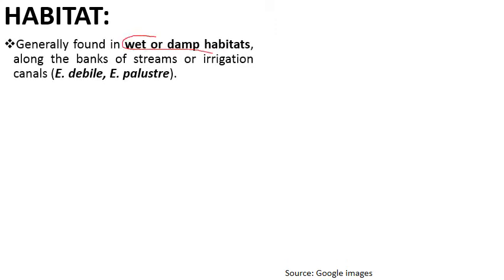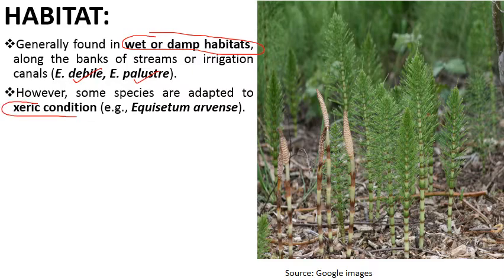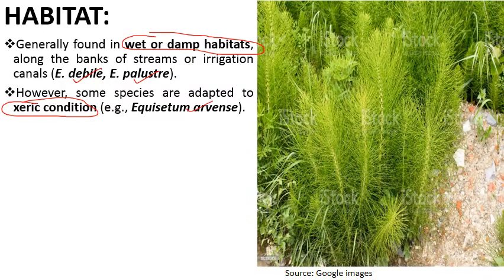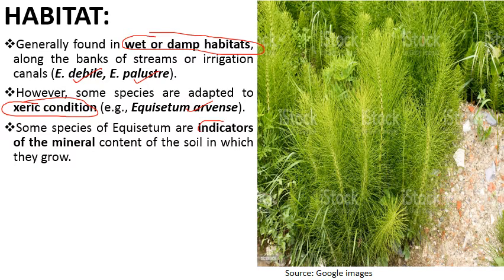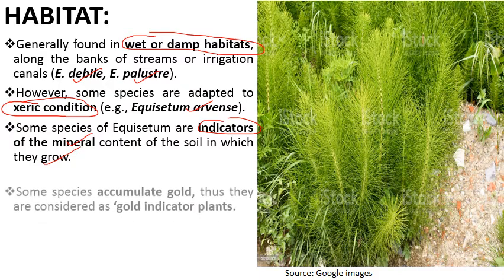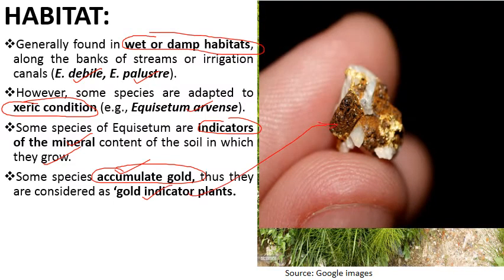Regarding habitat — the address of an organism — Equisetum prefers to grow in wet and damp habitats, mostly along the banks of streams or irrigation canals; for example, Equisetum debile and Equisetum palustre. Some species are adapted to xeric or dry conditions, for example Equisetum arvense. Some species of Equisetum are indicators of the mineral content of the soil in which they grow — some species accumulate gold and are considered gold indicator plants, playing an important role in exploration of new ore deposits.